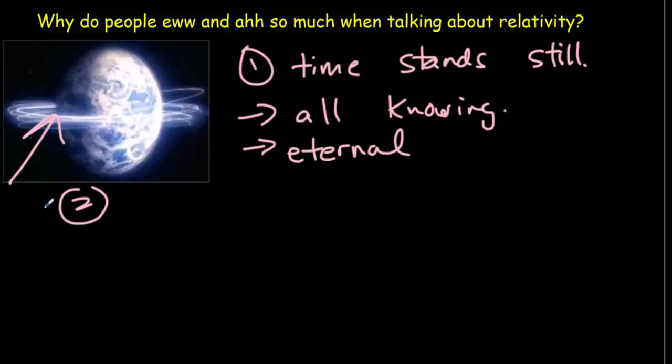Let's consider length contraction. So the continents shrink and shrink and shrink in the direction of Superman's motion. Eventually, as he approaches the speed of light, we could imagine his pupil being long enough to wrap itself all the way around the Earth. In other words, Superman can be everywhere at once. He can be omnipresent. So length contraction leads to omnipresence.